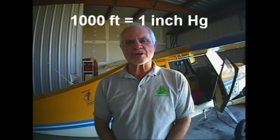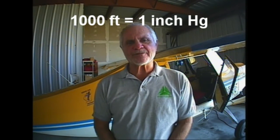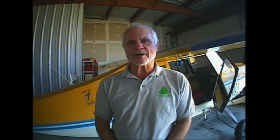Torricelli also discovered that if he moved his instrument to higher ground, the column of mercury became shorter — in fact, one inch shorter for each thousand feet of elevation above sea level. He also discovered that the pressure at any location varied from day to day, but it varied proportionally to the pressure at sea level. This discovery was key to the altimeter used in airplanes today.